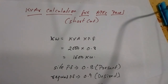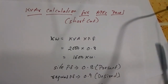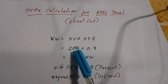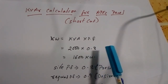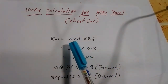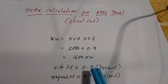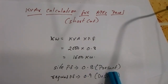In this video I will explain using a conversion factor or multiplication factor. Suppose the transformer installed at site is 2000 kVA and the present power factor of the site is 0.8. So we know that kilowatt equals kVA into power factor: 2000 into 0.8 is 1600 kilowatt. The present power factor at the site before installation of the capacitor bank is 0.8.